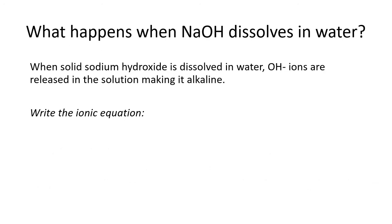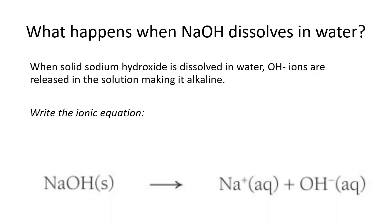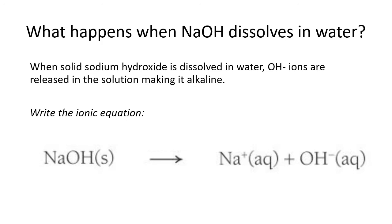Now let's do the same for the alkali sodium hydroxide — what happens when it dissolves in water? We know the solution will be alkaline because hydroxide ions are formed. Sodium hydroxide before it's dissolved is solid. When dissolved in water, we form an aqueous solution that contains sodium ions and hydroxide ions.